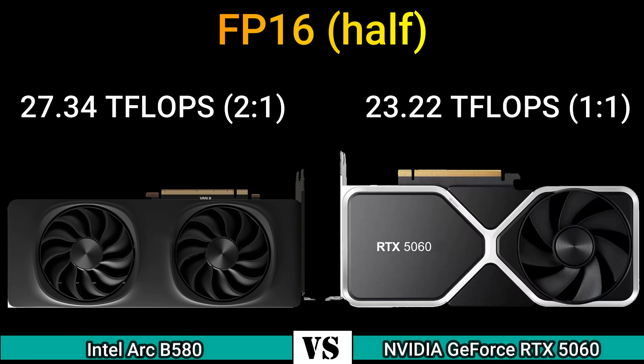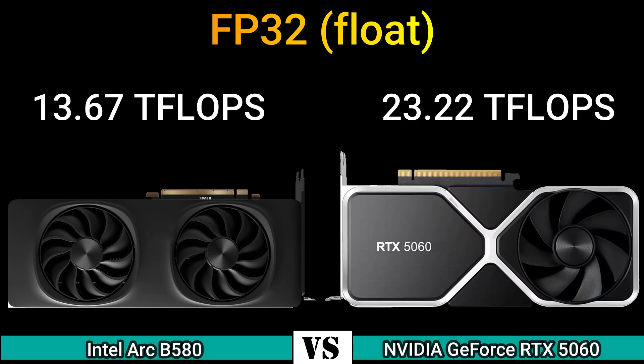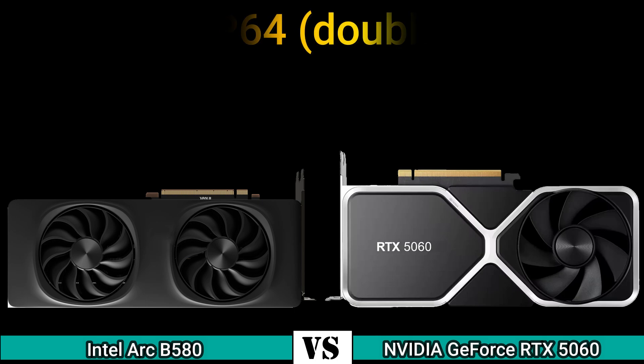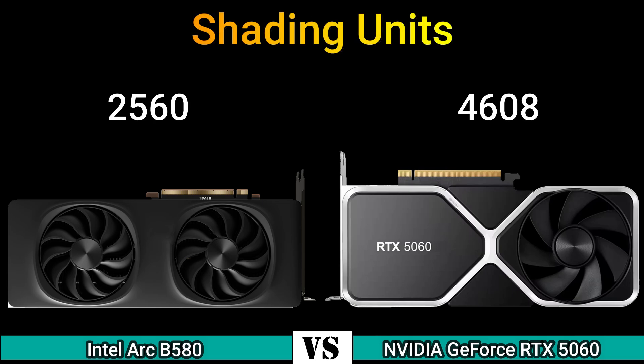FP16: 27.30 TFLOPS (2:1) and 23.22 TFLOPS (1:1). FP32: as listed. FP64: 1.709 TFLOPS (1:8) and 362.9 GFLOPS (1:64). Shading units: 2560 and 4608.